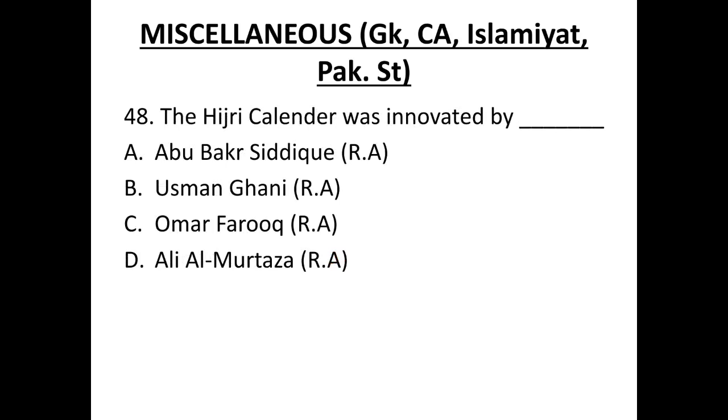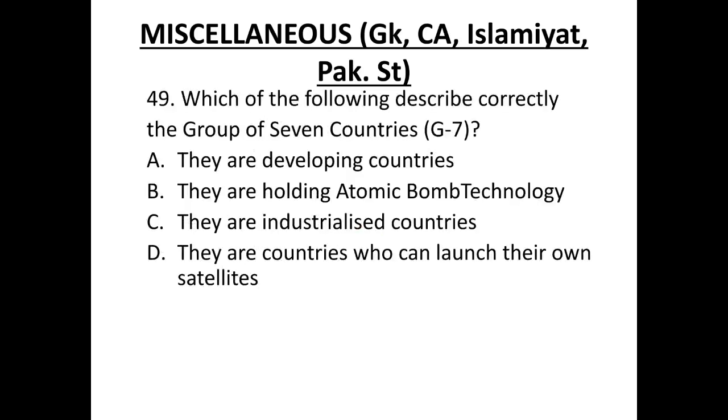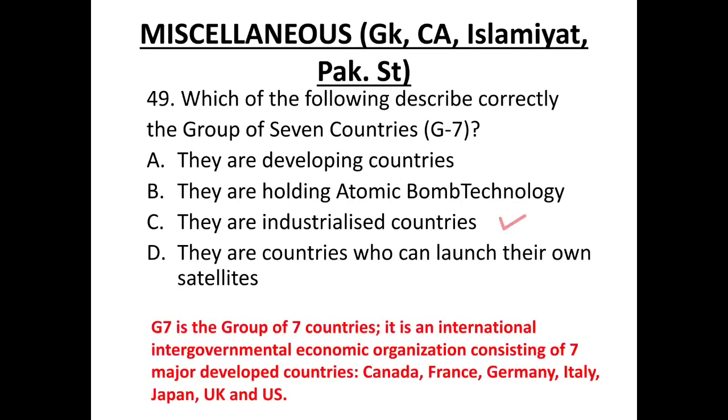The Hijri calendar was innovated by Umar Farooq. Question 49. Which of the following describe correctly the group of seven countries G7? The correct answer is C. They are industrialized countries. Keep in mind, G7 is the group of seven countries. It is an international intergovernmental economic organization consisting of seven major developed countries. Which includes Canada, France, Germany, Italy, Japan, UK and US.